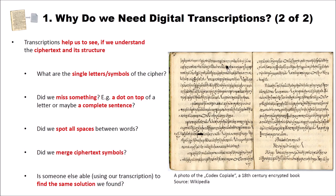We can also see if we merged ciphertext symbols — for instance, ink on paper or symbols that are very close together. With the Copiale cipher, since it is beautifully and well written, it is quite easy. But with other ciphertexts this can be difficult. We can also see if someone else using our transcription is able to find the same solution we found. If we deciphered a text and want to verify it, we give our transcription to another person, and when they find the same plaintext, we know our decipherment is correct. We could also create transcriptions in parallel and compare results.